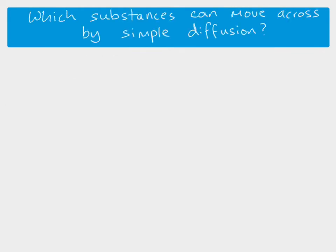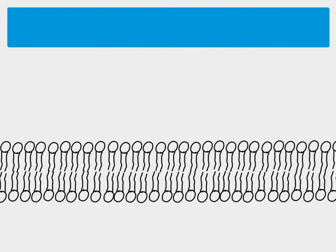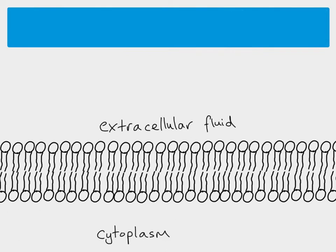The first way that substances could move across the cell surface membrane is by simple diffusion. Simple diffusion is a passive process — no energy is required — and substances will move down a concentration gradient. If we've got our phospholipid bilayer with extracellular fluid on the outside and cytoplasm on the inside, this cell surface membrane is separating two different areas. They might have different compositions, different water potential, and different pHs, and they need to be separated.